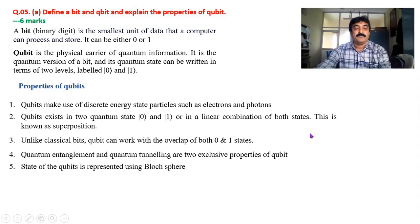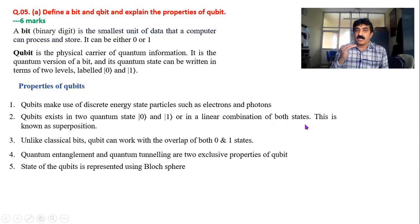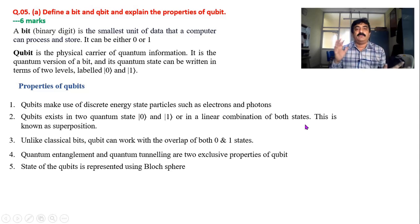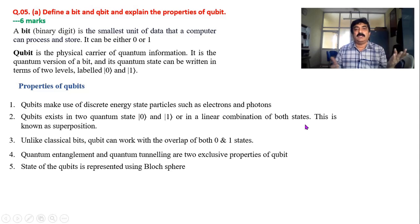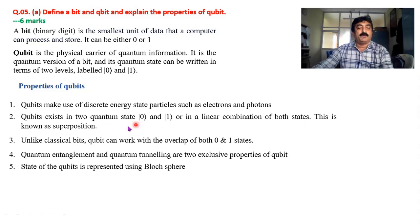Therefore we can store an enormous amount of data. Next, a qubit exists in two states — namely ket zero and ket one — or in a linear combination of both. It is not only zero and one; it can be a combination of zero and one as well. That is the advantage of qubit, whereas in classical computers it is either zero or one. In quantum computation we have a linear combination of both ket zero and ket one, which is known as superposition.